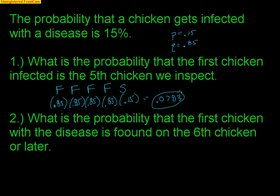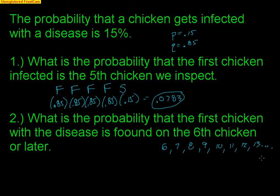That's easy — most kids actually think geometric is easier. Number two is a little bit trickier, but it's actually really easy if you think about it. What is the probability that the first chicken with the disease is found on the sixth chicken or later? That means we want the first chicken with the disease to be on the sixth or the seventh or the eighth — and technically, since there's no set number of trials, this would go on towards infinity. It could be the 23rd chicken or the 100th chicken. All I know is that I want the first infected chicken to be after the sixth.